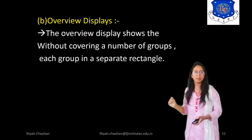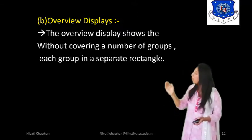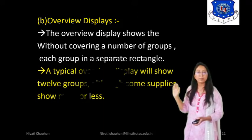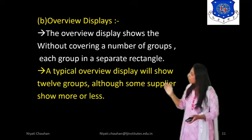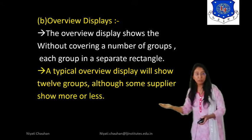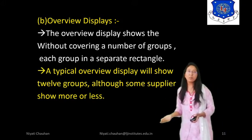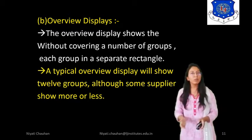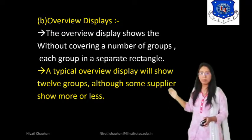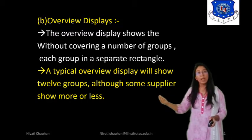Next, the Overview Display. The overview display shows, without covering detail, a number of groups — each group in a separate rectangle. A typical overview display will show 12 groups, although some suppliers show more or less. In the overview display, we can see the whole process on one screen, showing 12 or more groups.